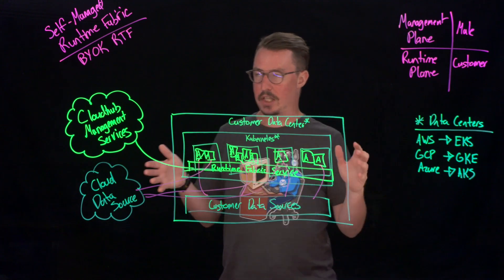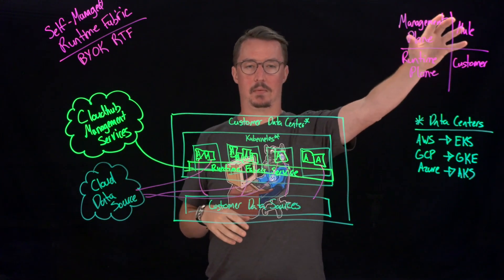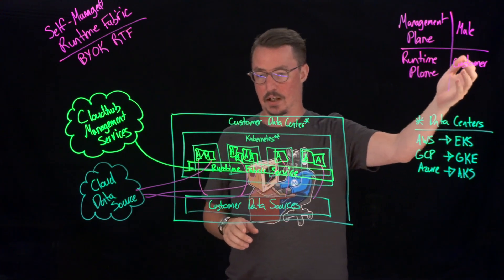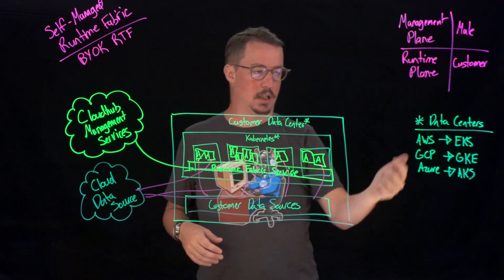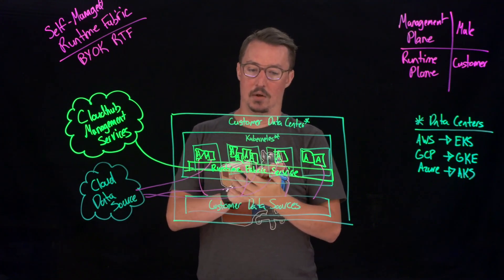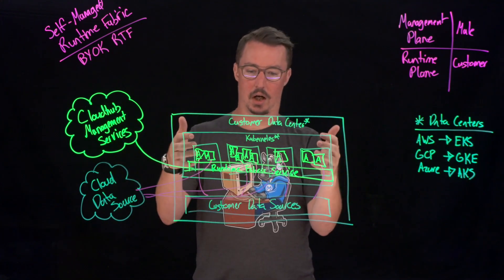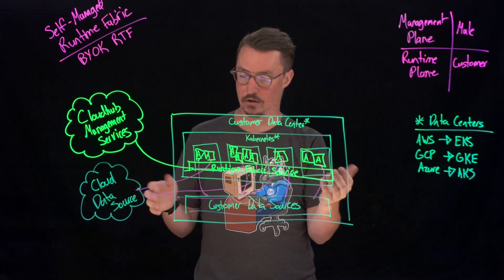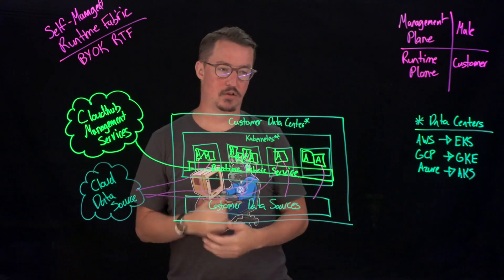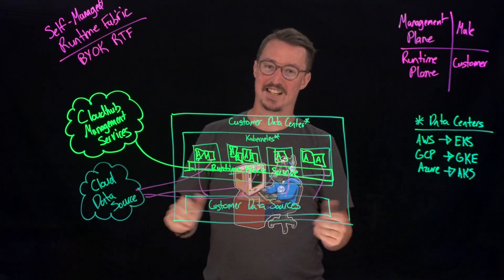To quickly recap: we have our self-managed Kubernetes, sometimes referred to as BYOK. The management plane is hosted by MuleSoft, and the runtime plane is completely hosted by the customer. The runtime plane needs to be on either AWS, GCP, or Azure, because we require Kubernetes, and the ones supported right now are EKS, GKE, and AKS. Once we have our Kubernetes deployed and our runtime services across all of our nodes, we can deploy our applications, connect them up to our management services, and all the different data sources they need. That is our self-managed Kubernetes, or self-managed runtime fabric. Thank you and have a great day.